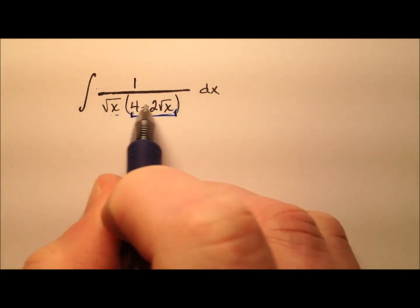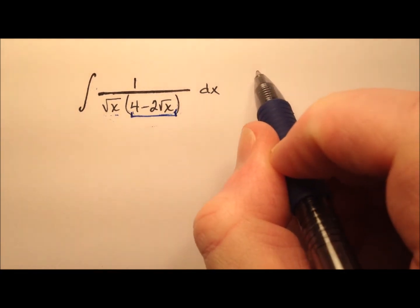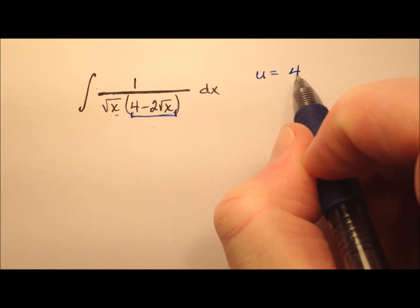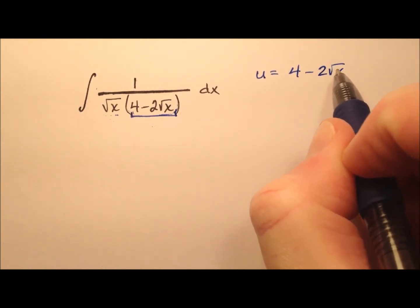I'm going to say this quantity right here is going to be my u. So u equals 4 minus twice the square root of x.